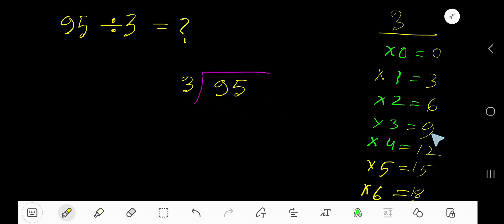3 goes into 9 how many times? 3 goes into 9 three times. Write 3. 3 times 3, 9. Subtract 0. Bring down this 5. 0, 5 means 5.